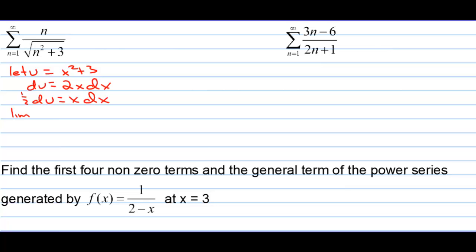We have the limit as B approaches infinity of the integral from 1 to B of, let's see, what would we have? We'd have 1 half and 1 over square root of U, DU. But that 1 over square root of U is really U to the negative 1 half. To do the integral, we add 1, so we have the limit as B approaches infinity of 1 half. Add 1, we'd have U to the 1 half, but then times 2.